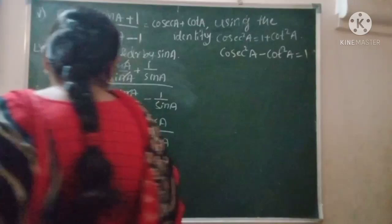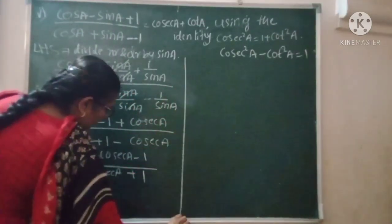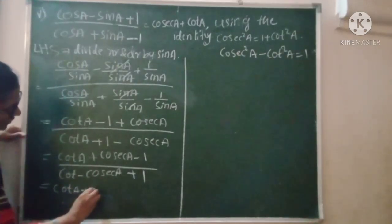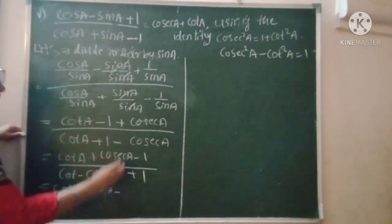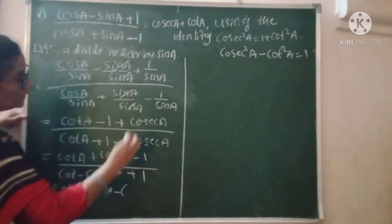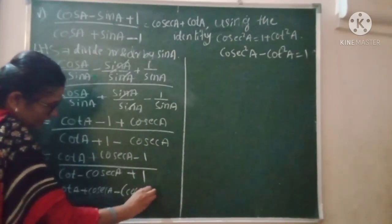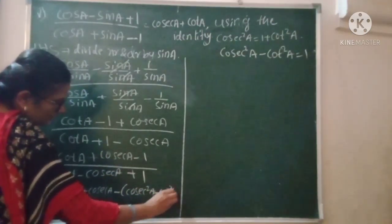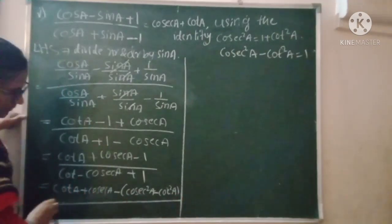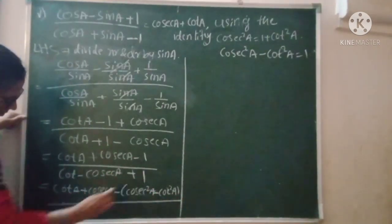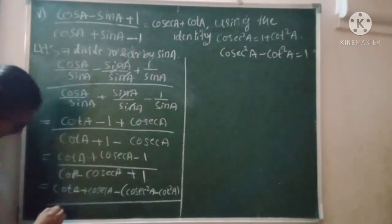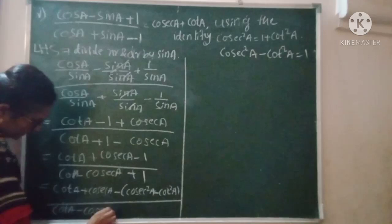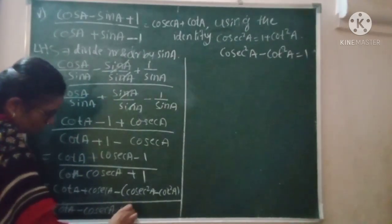So I'm writing down: cot A plus cosec² A minus cot² A. Substituting this as 1, with the minus sign. This is the denominator.